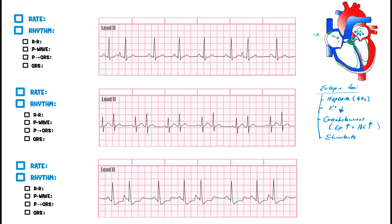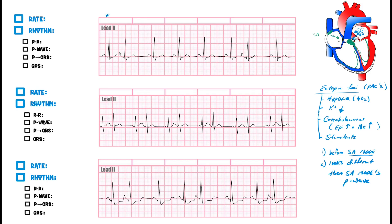Because the ectopic focus fires faster than the SA node, two key things happen: it fires before the SA node, and its P wave looks different from the SA node's P wave. PACs coming from these ectopic foci are going to look different on the EKG.